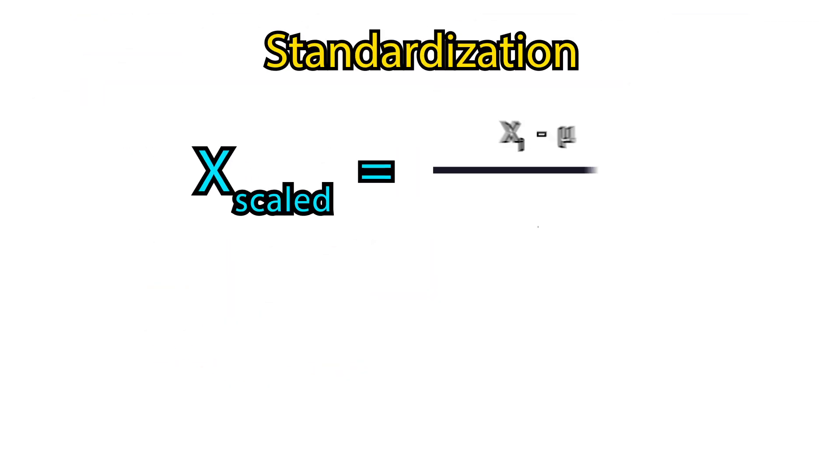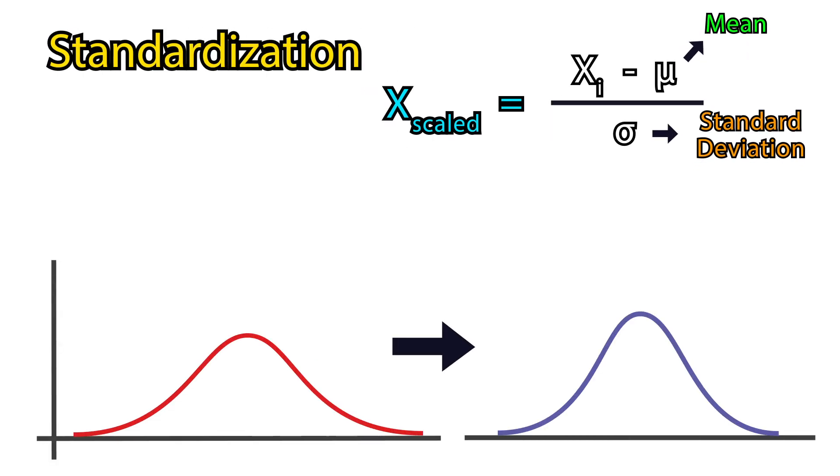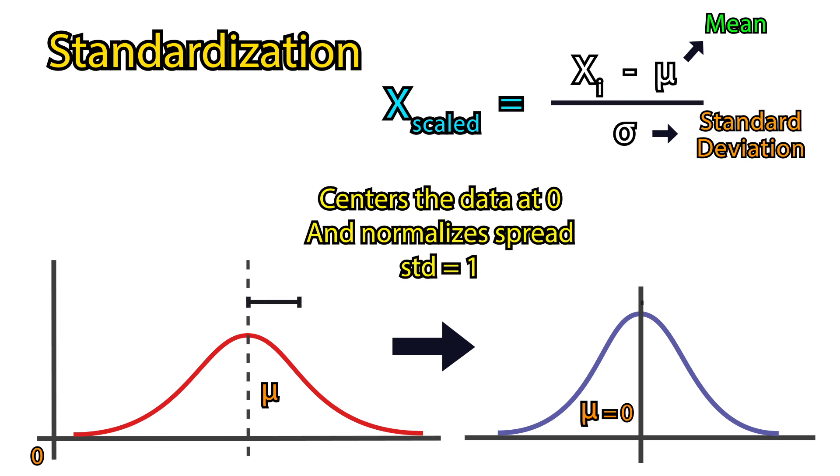Standardization, on the other hand, converts the data to have zero mean and one standard deviation. So unlike min-max scaling, it centers the data and normalizes the spread.